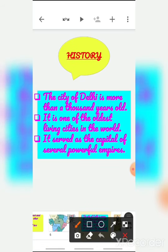Now let's talk about history. The city of Delhi is more than a thousand years old — that means it is one of the oldest cities. Delhi is one of the oldest living cities, meaning people have been living here from the oldest times until now. It is one of the oldest living cities in the world.